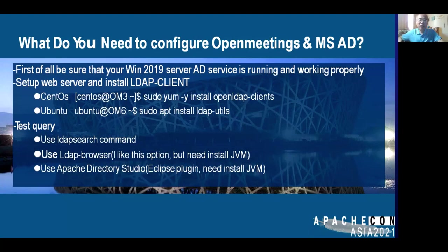What do you need to configure OpenMeetings with MS-AD? First, be sure the Windows Server 2019 AD service is running and working properly. Then set up the web server and install LDAP clients — the command differs slightly per OS. After setting up LDAP client software, you can use the LDAP search command to test queries, or use two GUI tools: LDAP Browser and Apache Directory Studio. For both GUI tools you need to install a Java Virtual Machine.